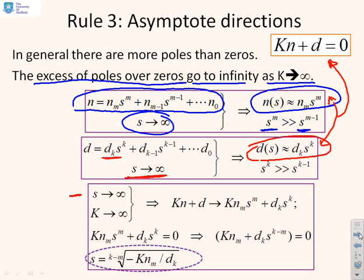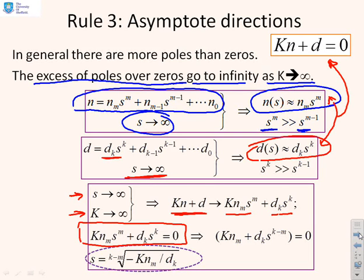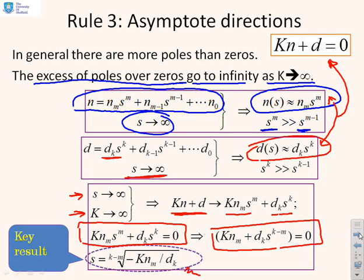So if we let S and k go to infinity, then KN plus D is approximately given as K·Nm·S^m plus dk·S^k. Now for closed-loop poles this expression equals zero. Taking out the surplus powers of S, what we get is K·Nm plus dk·S^(k-m) equals zero, or S must be the (k-m)th roots of minus K·Nm over dk. This is the key result. We've got k minus m roots, which is the excess of poles over zeros, and the solutions go to infinity.